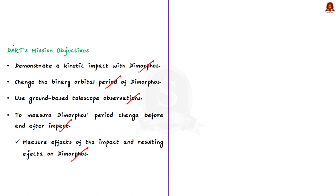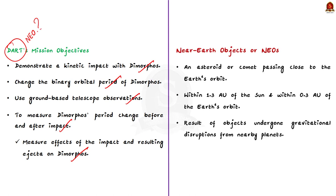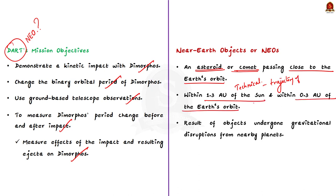The DART test was conducted on a near-earth object. A near-earth object is most often an asteroid or comet that passes very close to Earth's orbit. Technically, a near-earth object is considered to have a trajectory that brings it within 1.3 astronomical units of the sun, and hence within 0.3 astronomical units — approximately 45 million kilometers — of Earth's orbit. These near-earth objects represent potential catastrophic threats to our planet, generally resulting from objects that experienced gravitational disruptions from nearby planets, moving them into orbits that allow them to come close to Earth.